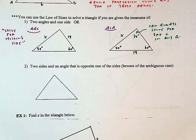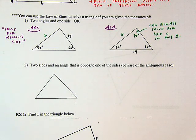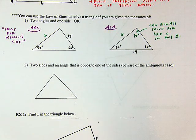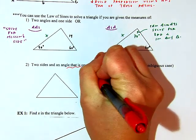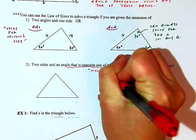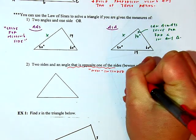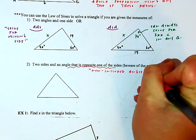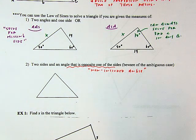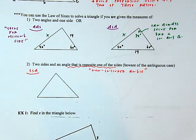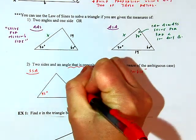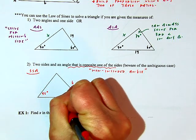Case two: we can also use the law of sines when given two sides and an angle opposite one of the sides — but beware of the ambiguous case. Another way to phrase this is that we need a non-included angle. This is side-side-angle (SSA). For example, a triangle with sides 6 and 8 and a non-included angle of 45 degrees.